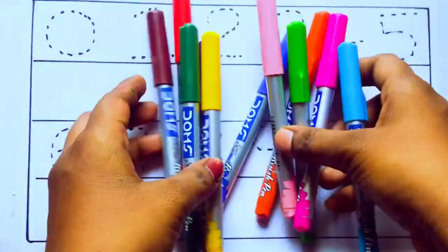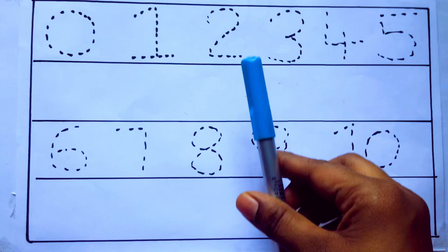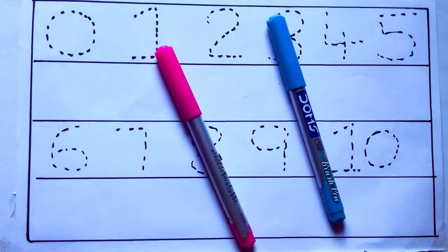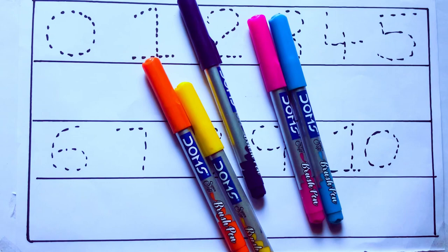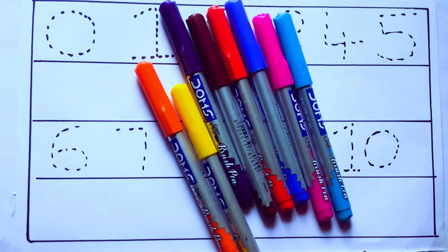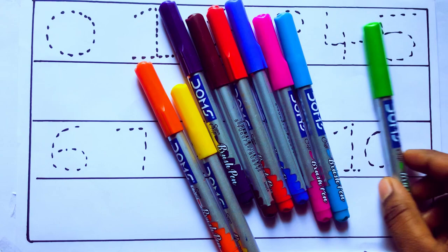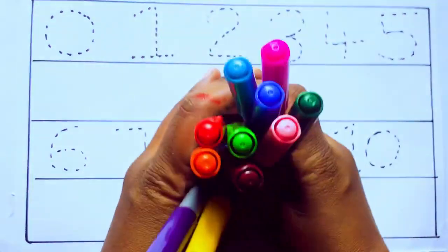Let's learn some colors. These are all the color pencils. Let's learn the names. Sky blue color, pink color, yellow color, orange color, violet color, blue color, brown color, red color, green color, and pink color.